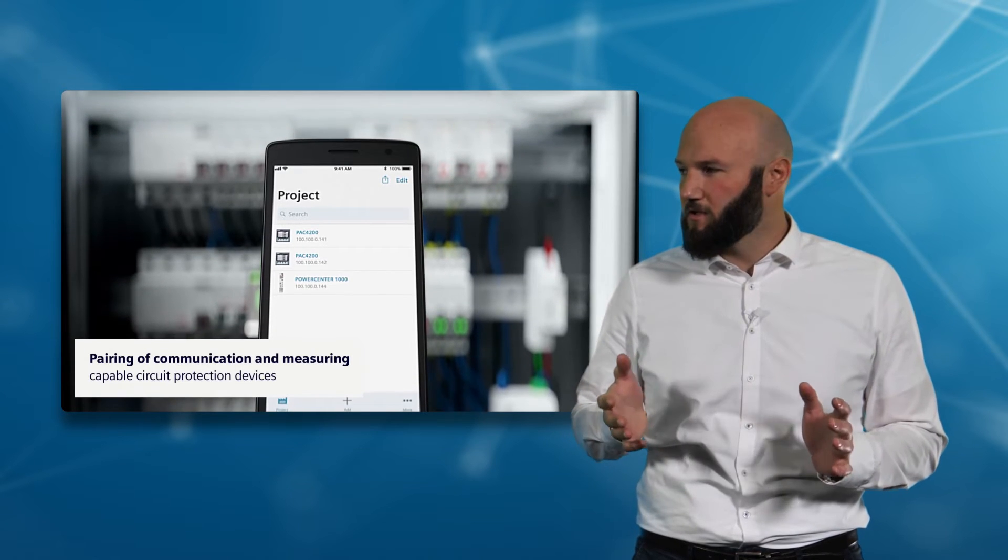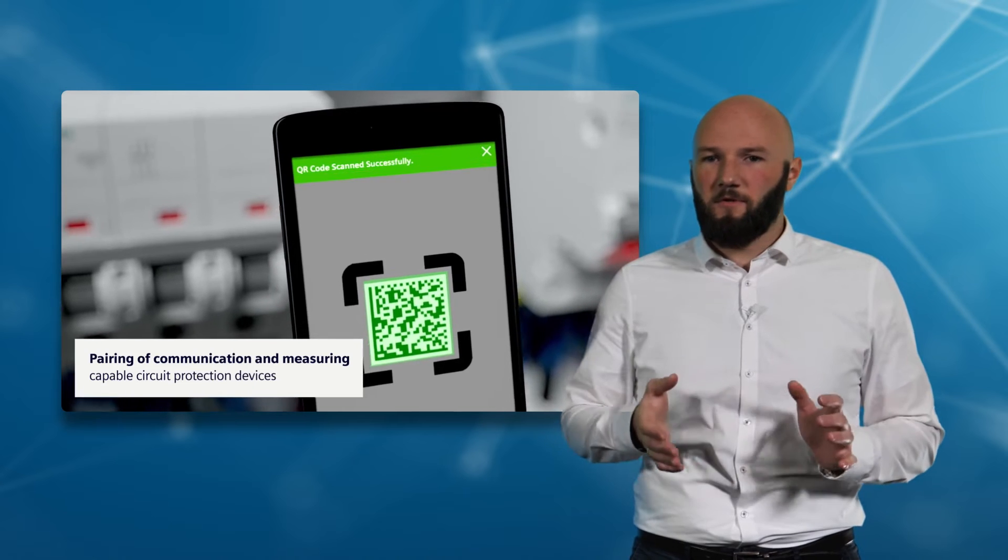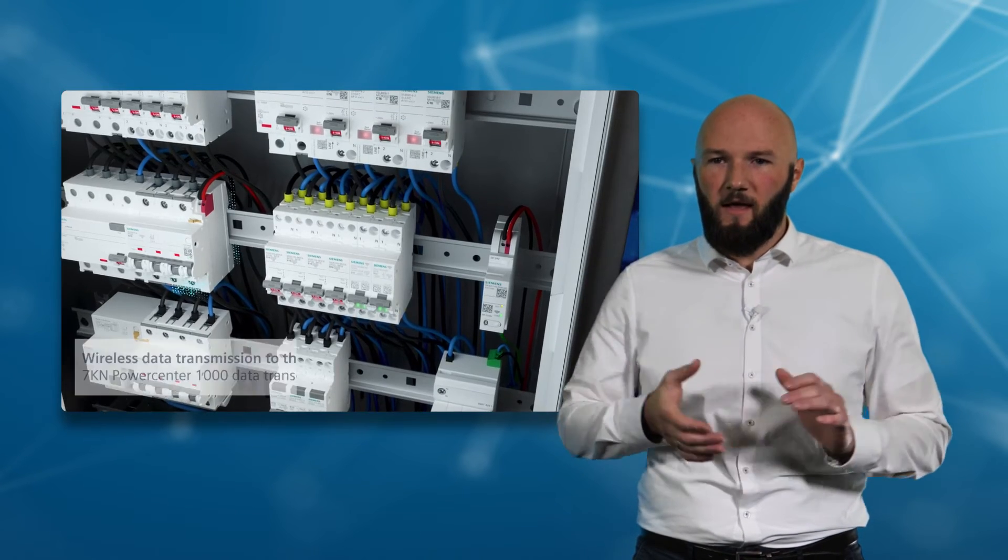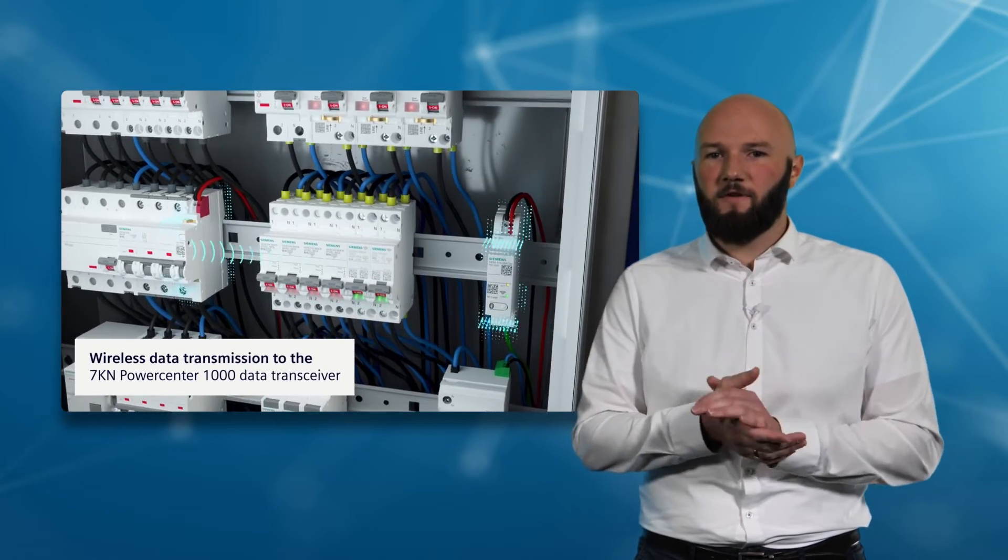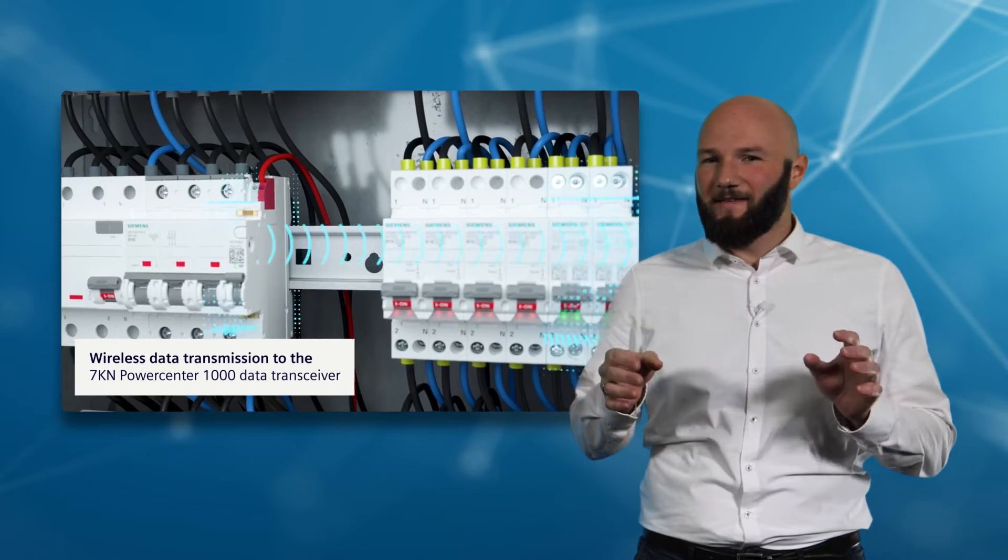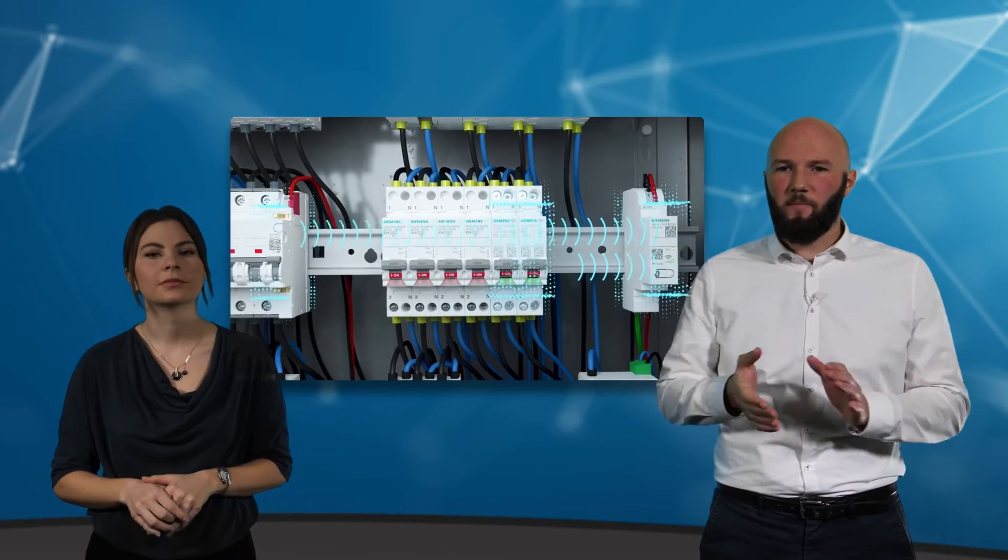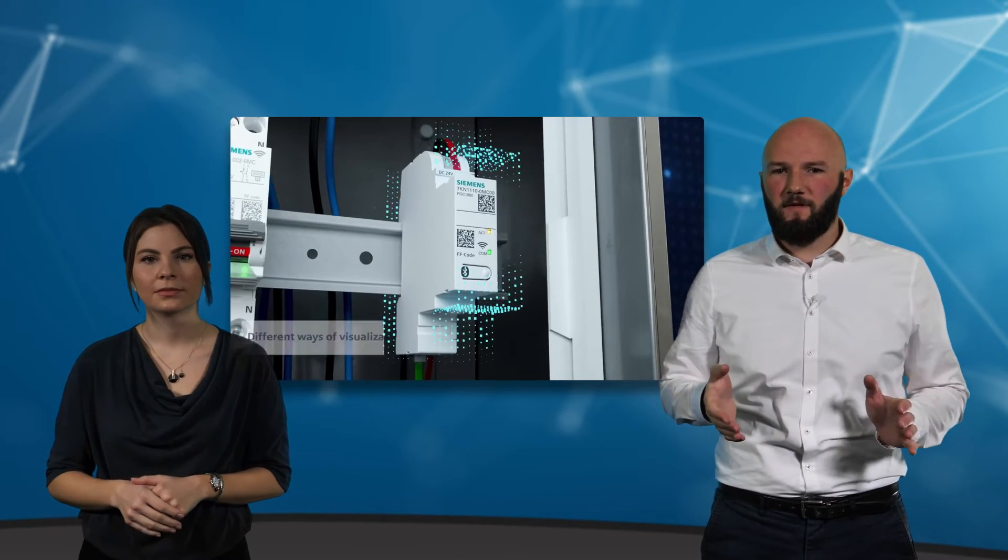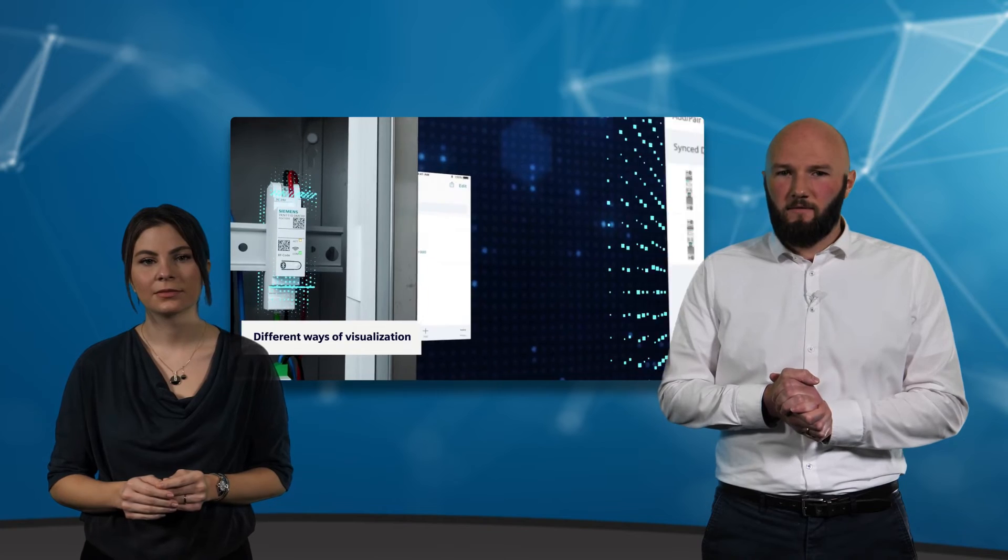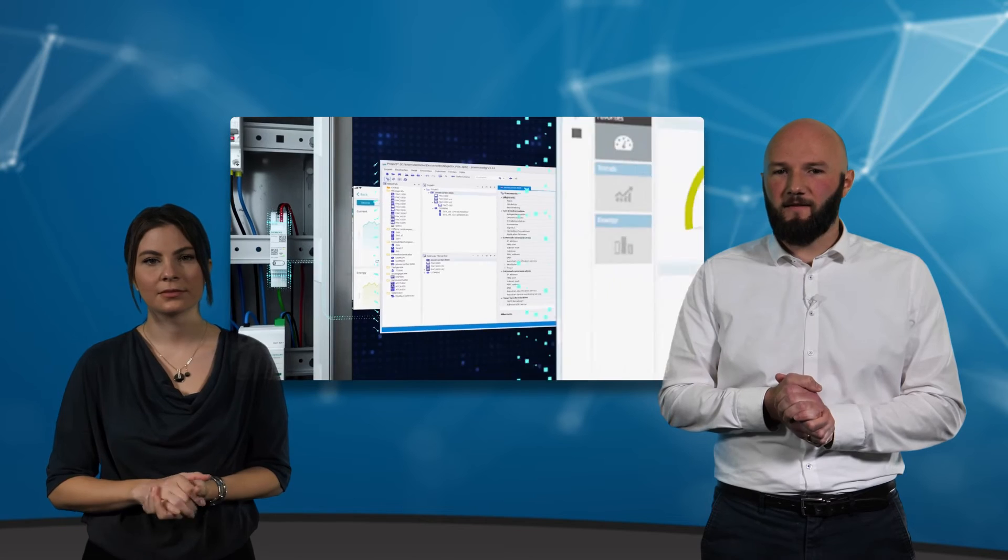The record of electrical values such as current, voltage, temperature, and switching states makes it possible to quickly detect consumers with increased power consumption, irregularities, and faults in the final circuit to rectify these defects at an early stage. The 7KN PowerCenter 1000 data transceiver collects the recorded data and transmits it to mobile devices, PCs, and cloud solutions for visualization and analysis.